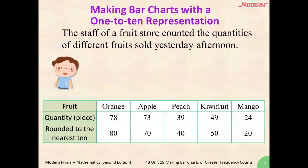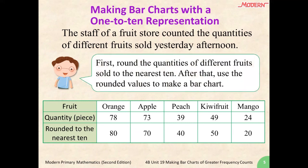Now, let's take a look at one example. The staff of a fruit store counted the quantities of different fruits sold yesterday afternoon. Before we make the bar chart, we have to round the quantities of different fruits sold to the nearest tens, because we are using a bar chart with a 1 to 10 representation. After that, we want to use the rounded values to make a bar chart.